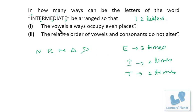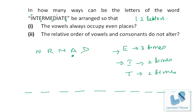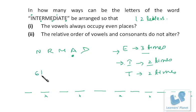We need vowels to always occupy even places. The vowels are E, I, and A — giving 6 vowels total. In 12 positions, the even places are positions 2, 4, 6, 8, 10, 12 — that's 6 even positions, perfectly filled by the 6 vowels. Six vowels in 6 positions can be arranged in 6! ways. Since E is repeated 3 times, divide by 3!; since I is repeated 2 times, divide by 2!.